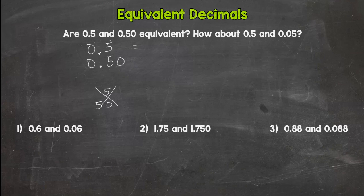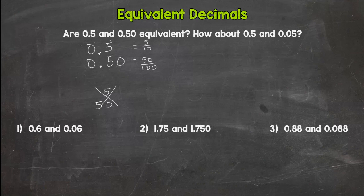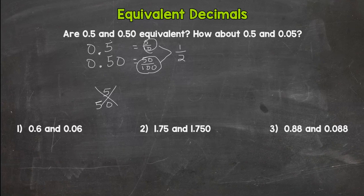I'm going to convert both of these to a fraction to help with this concept. Five tenths looks like five out of ten, and fifty hundredths looks like fifty out of a hundred. Do you notice anything? They are both one half. Five out of ten is half and fifty out of a hundred is half. Those fractions have different names, but they both have the value of one half — they are equivalent. The same holds true for these two decimals: five tenths and fifty hundredths are equivalent.